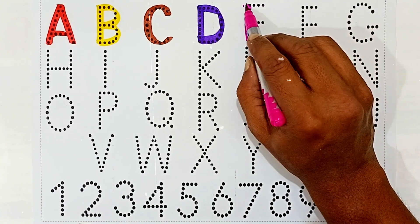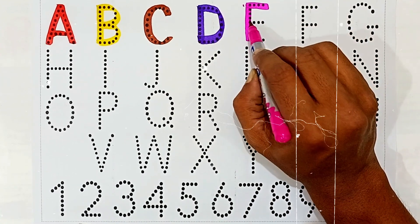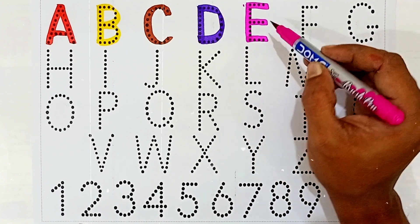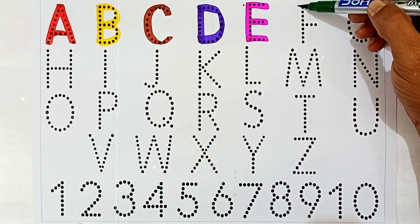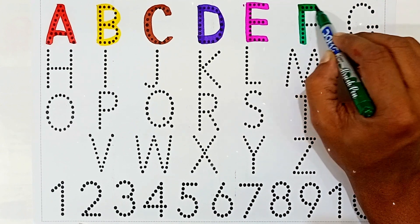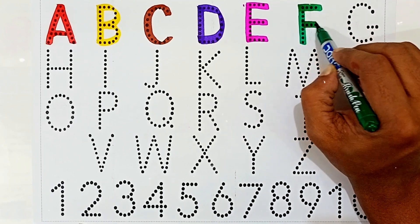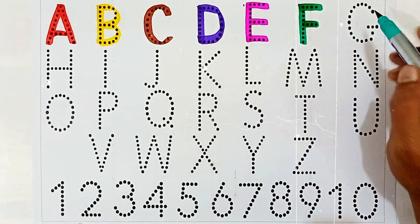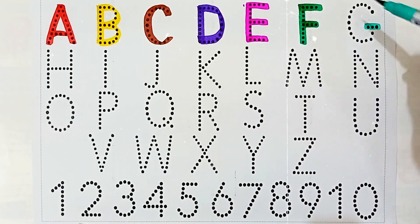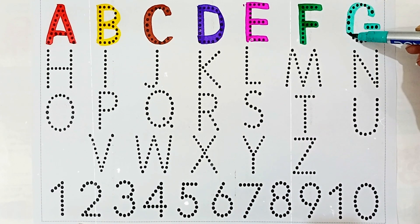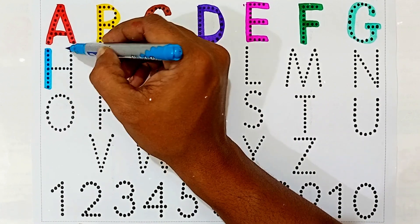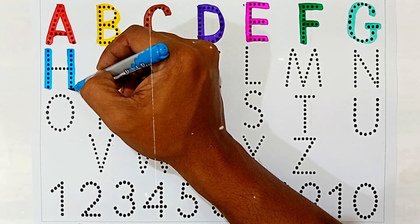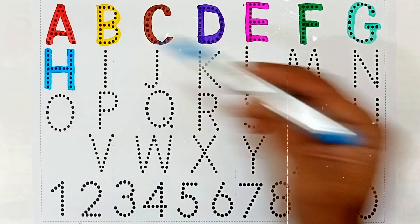E — E for egg, E for elephant. Okay. F — this letter is F, F for fish. Ke baad G — this letter name is G, G for goat. G ke baad H — H for hen.